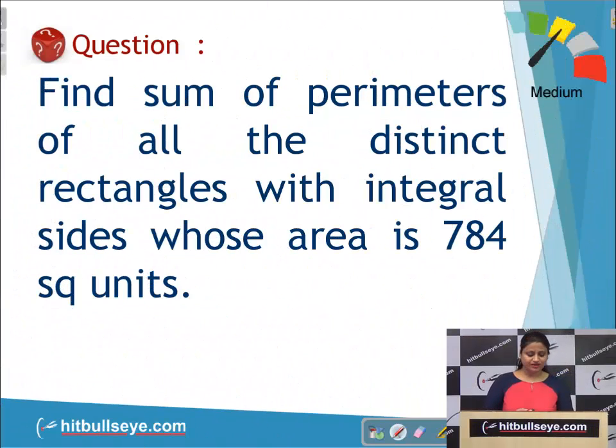Question is: find the sum of perimeters of all the distinct rectangles with integral sides whose area is 784 square units.